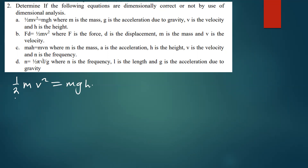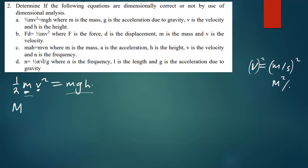The ½ is a constant, so when dealing with dimensions we can ignore it. We check if the left side equals the right side. The mass gives us M. For v², the units of velocity are meters per second, so squaring gives meters squared per second squared.